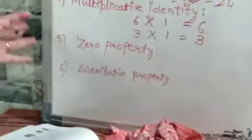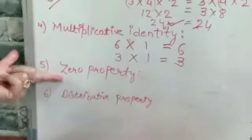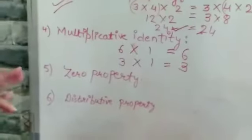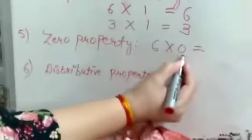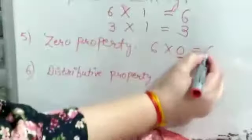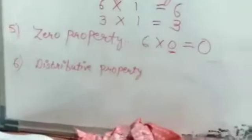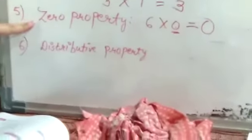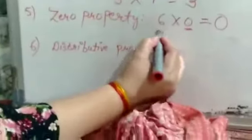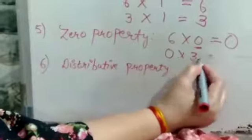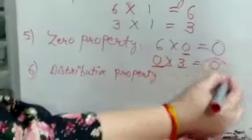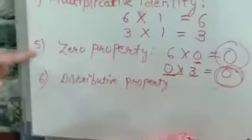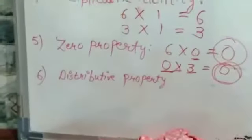One more property under multiplication is the zero property. If one of the factors is 0 — for example, if 6 is multiplied by 0 — the final product will definitely be 0. This is a new property under multiplication. Like 0 multiplied by 3 is also 0. If one of the factors is 0, the product will be 0.